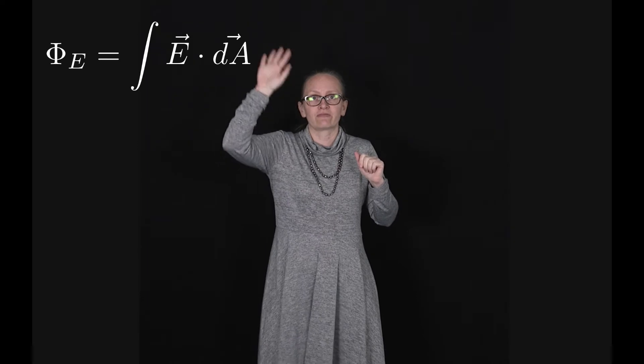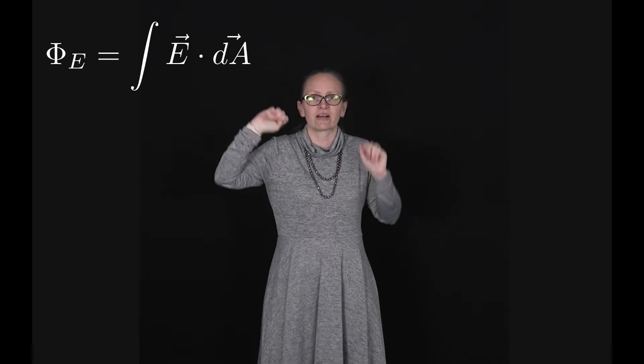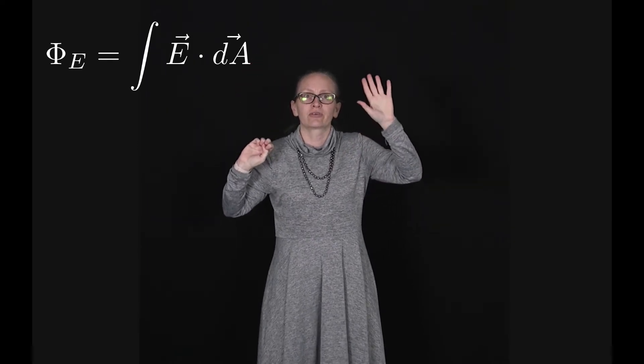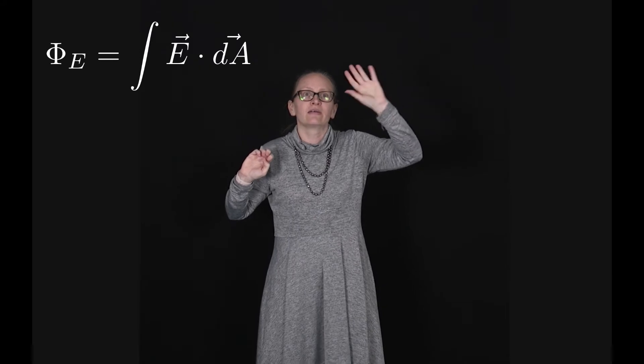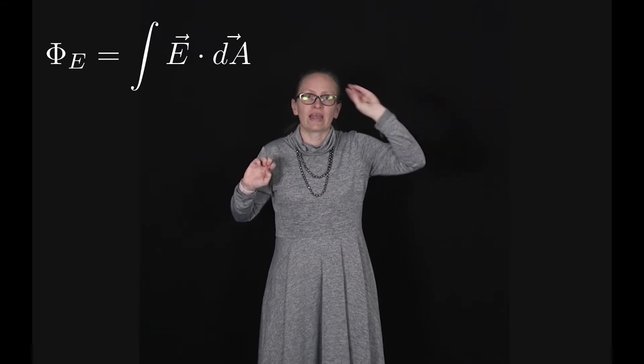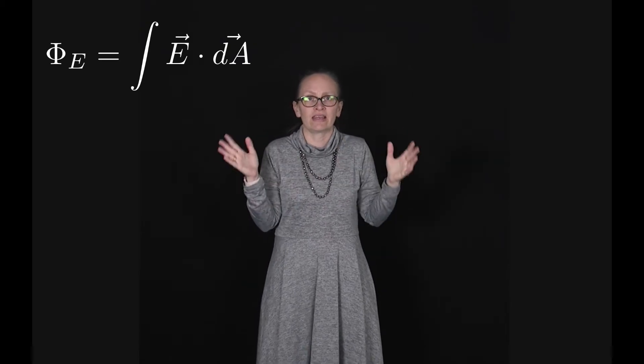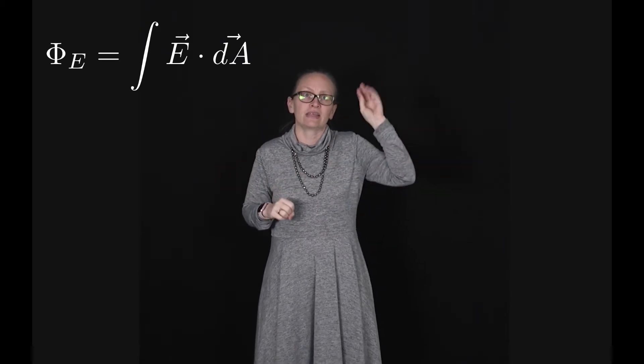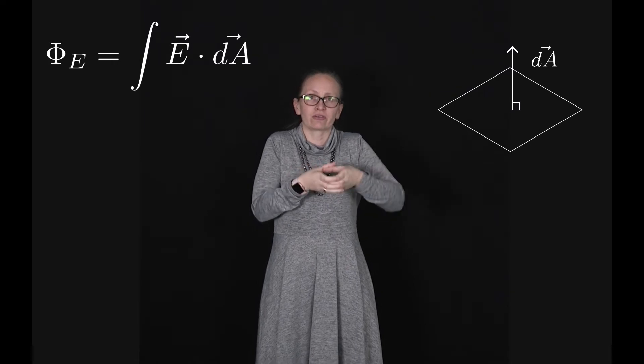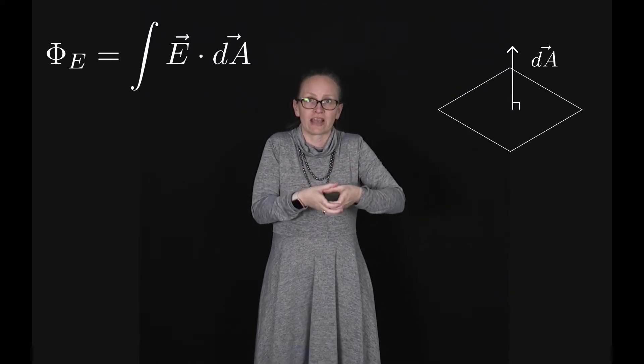So to calculate the electric flux through a surface, we can calculate it with the equation φ_E, the electric flux is equal to the integral of E dot dA, where E and dA are both vectors. E here stands for the electric field and dA stands for a little increment of the surface area.